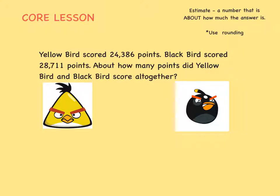There's a few key words in this problem to help you figure it out. First of all, I see that we're trying to figure out how many points they have all together. Because it says all together, we know we need to add. Another key word is about. About means we don't need an exact answer. So since it says about, we know we are going to estimate.